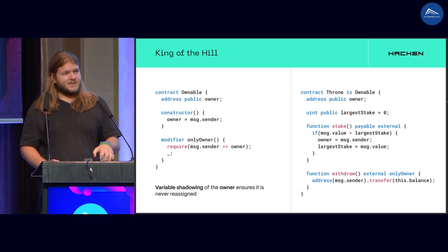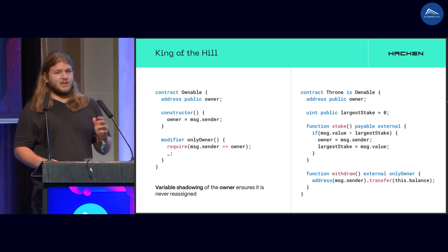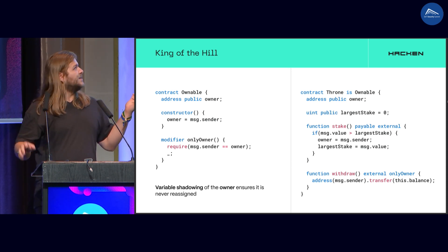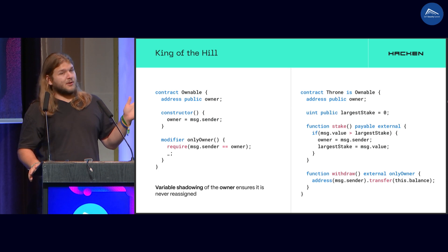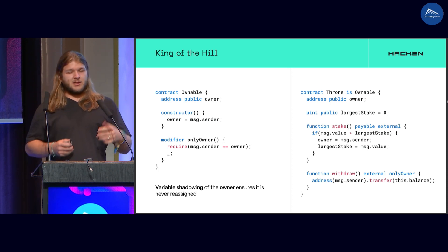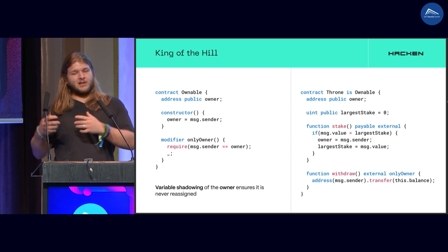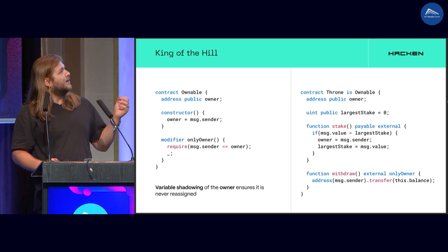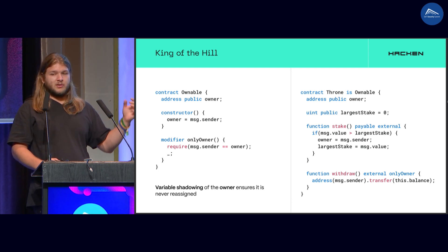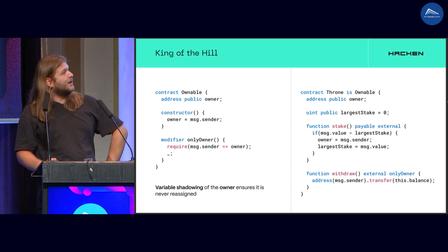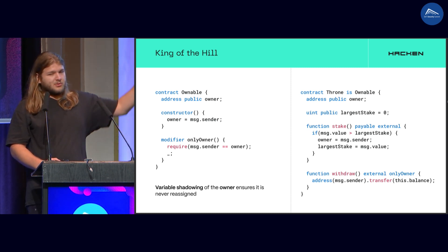But here is one that actually does. This is a King of the Hill game. In it, you have a stake function — it checks if you sent more than the largest stake. And if you did, then you become the new owner, the new King of the Hill. And then, using the withdraw function on the right, you can withdraw your funds.